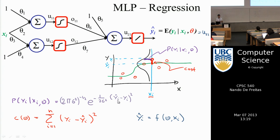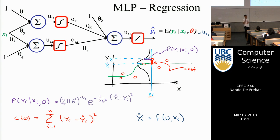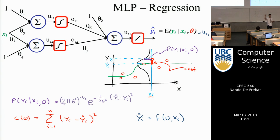Taking the negative log of the Gaussian likelihood drops the constant and gives us a sum of squared errors as the cost function — exactly least squares, but now y-hat is not a linear function but a non-linear neural network (a combination of sigmoids). Everything learned for linear models still applies.